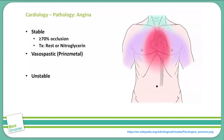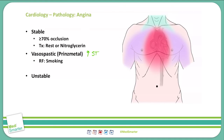Next we will discuss vasospastic angina, also known as Prinzmetal's angina. Vasospastic angina occurs at rest — there is typically no exertion associated with it. We will see a transient elevation in the ST segment on EKG. Risk factors include smoking. It is important to note that hypertension and hyperlipidemia do not increase one's risk of developing vasospastic angina.